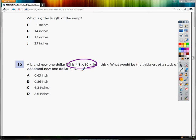Or we can just use the whole function of multiplying in the first place and just multiply 4.3 times 10 to the negative third times 200.